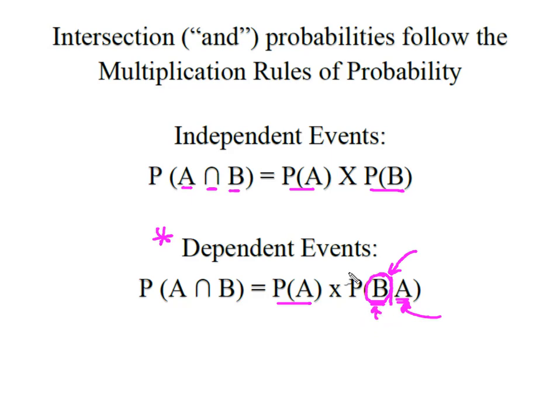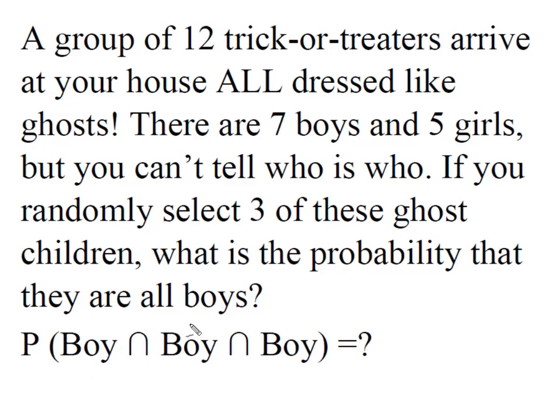Let's look at an example. We have a group of 12 trick-or-treaters who arrive at your house, and they're all dressed like ghosts. There are seven boys and five girls, but you can't tell who is who. If you randomly select three of these ghost children, what's the probability that the three you select are all boys? What we're looking for is the probability of a boy AND a boy AND a boy.